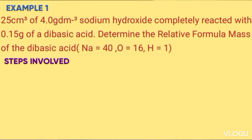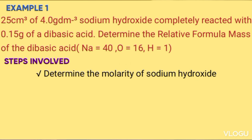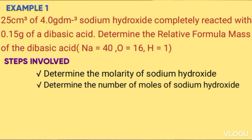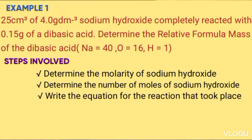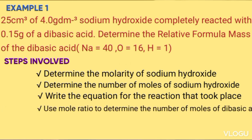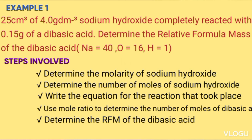Steps to answer this question: Step one — determine the molarity of sodium hydroxide using mass per liter divided by molar mass. Step two — determine the number of moles of sodium hydroxide using molarity times volume over 1000. Then write the equation for the reaction. Next, use the mole ratio to determine the number of moles of dibasic acid.